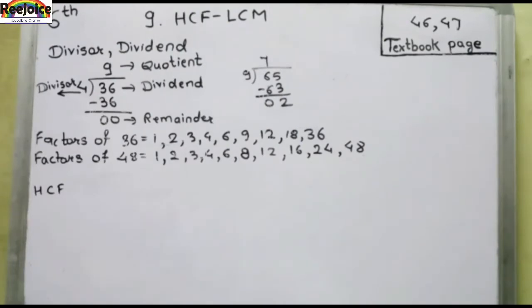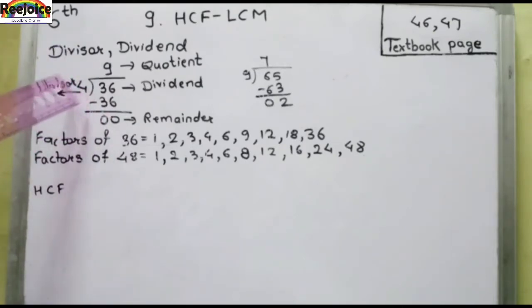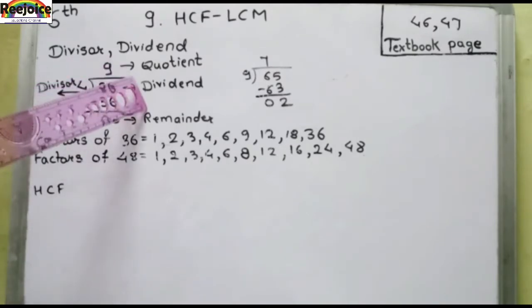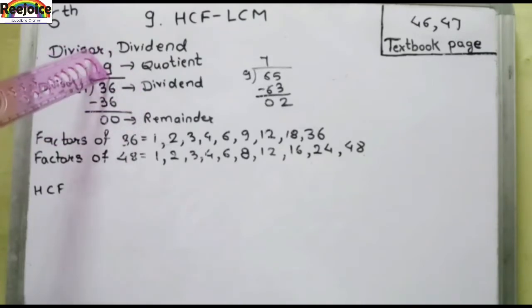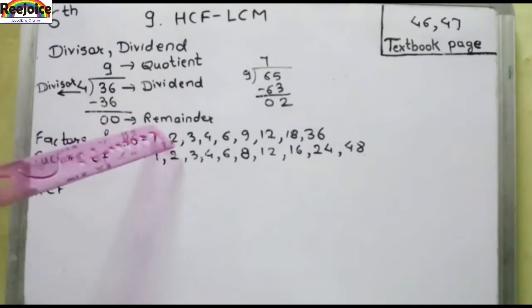इसमें अपने divisor, dividend देख लेते हैं क्या होता है। अपने अब एक 36 को 4 से divide कर दिया। 4 जो रहेगा वह रहेगा divisor। इससे अपने जिसको divide किया गया है वह है dividend, और जो answer आएगा वह है quotient, और जो नीचे बच रहा है minus divide करने के बाद वह है remainder।